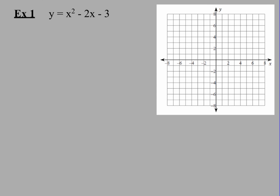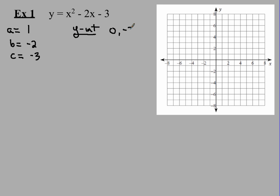In example number one, we've got the equation y equals x squared minus 2x minus 3. The first thing I want you to do is identify the A, B, and C values. The A value is what's sitting in front of x squared — there's no number there, so we know that number is 1. The B value is easy to see: that's negative 2. And the C value, of course, is negative 3. Now remember, the C value gives me the y-intercept. So that is zero comma negative 3, because it's always zero comma the C value. I'm going to plot that point right there — that will be my y-intercept.